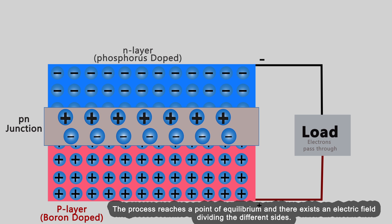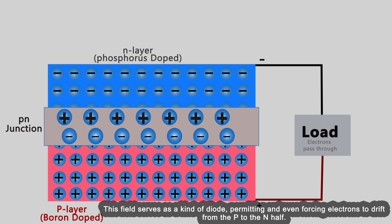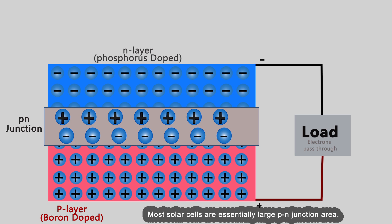The process reaches a point of equilibrium, and there exists an electric field dividing the different sides. This field serves as a kind of diode, permitting and even forcing electrons to drift from the p to the n half. Most solar cells are essentially large p-n junction areas.